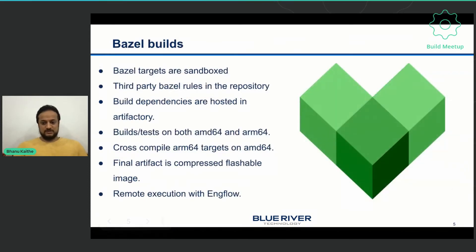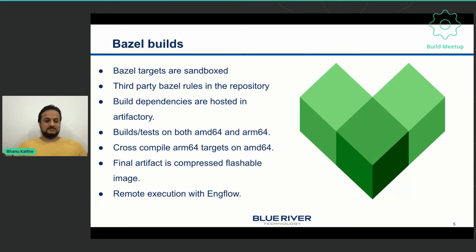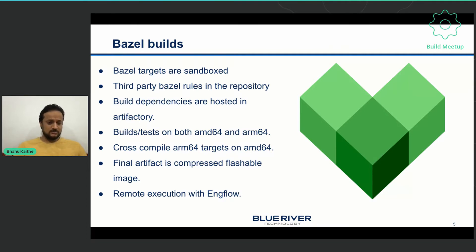Bazel builds — obviously we use only Bazel to build and test our application. This is a huge build. Normally without any remote execution or sandboxing, it used to take around four to five hours to build the entire thing. But with remote execution and sandboxing, we reduced it a lot. We also have dependencies hosted in our local build environment so that we don't download from the internet or cause a lot of network bandwidth. We run tests on ARM64 and AMD64 based on the test case, and also run some GPU test cases. We cross-compile the ARM64 targets on AMD64. The final artifact is a huge compressed image and it is flashable.